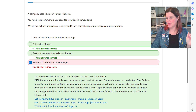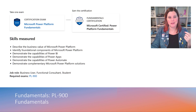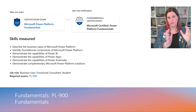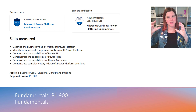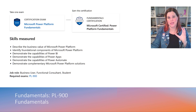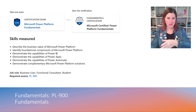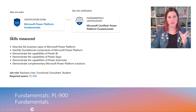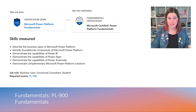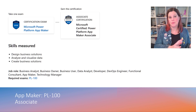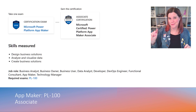That is PL-900 — the foundation level and a really good place to start. If you want to go further, you move to the associate level, where most of the exams sit. Most of these are one exam, one certification. There is one at the end, the expert level, where you need two exams — we'll come to that.